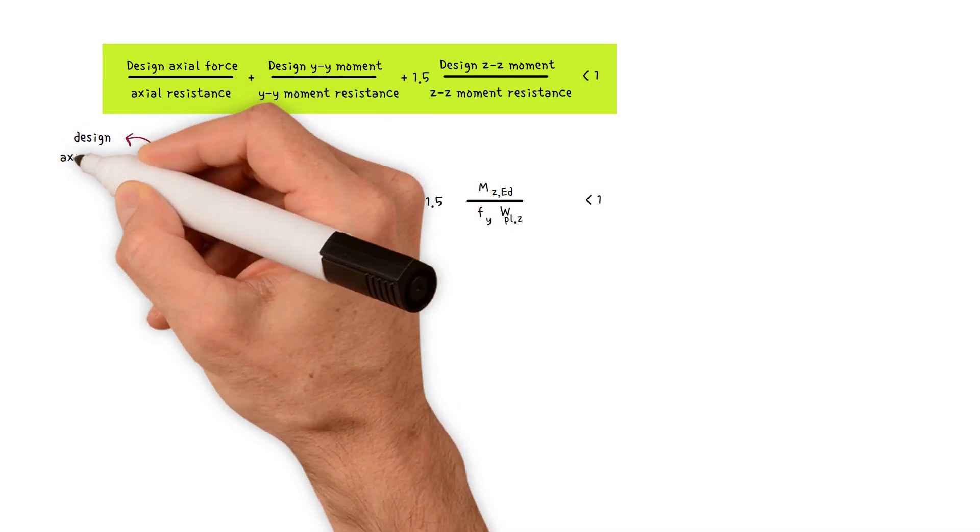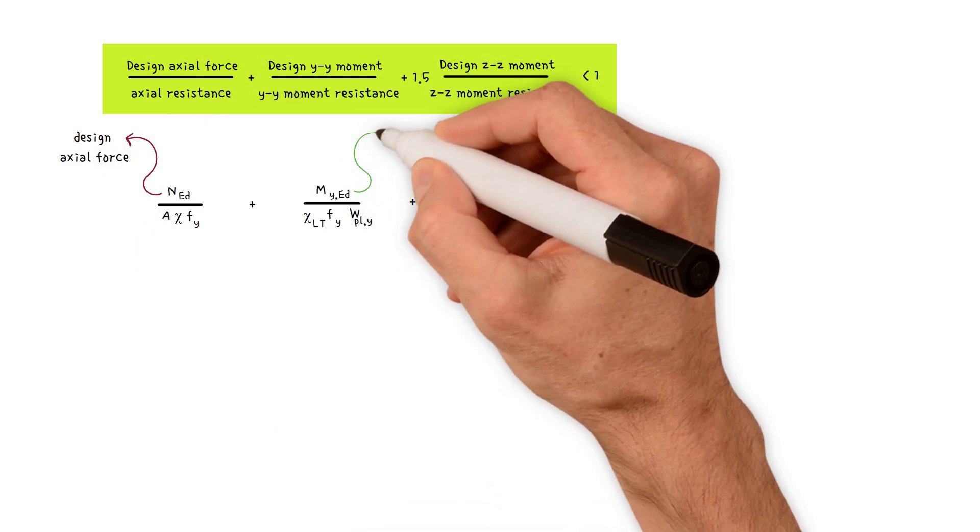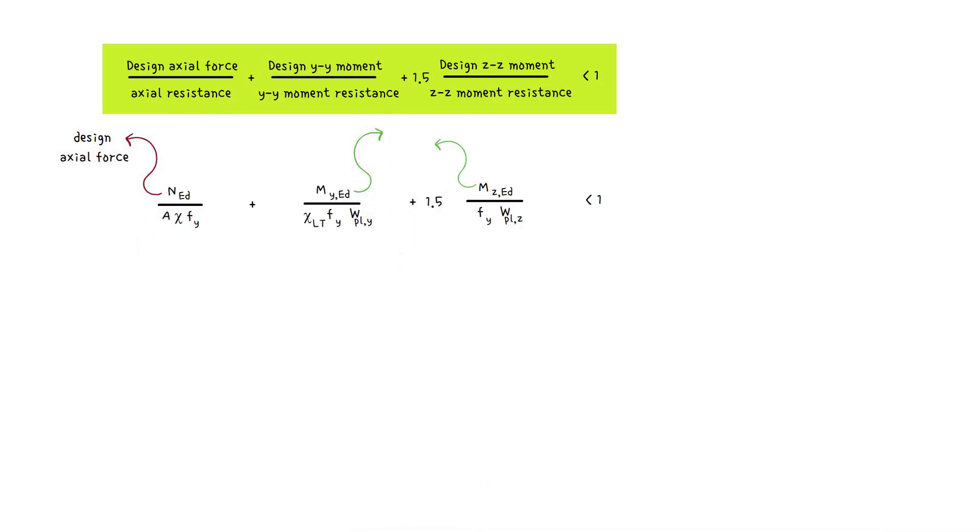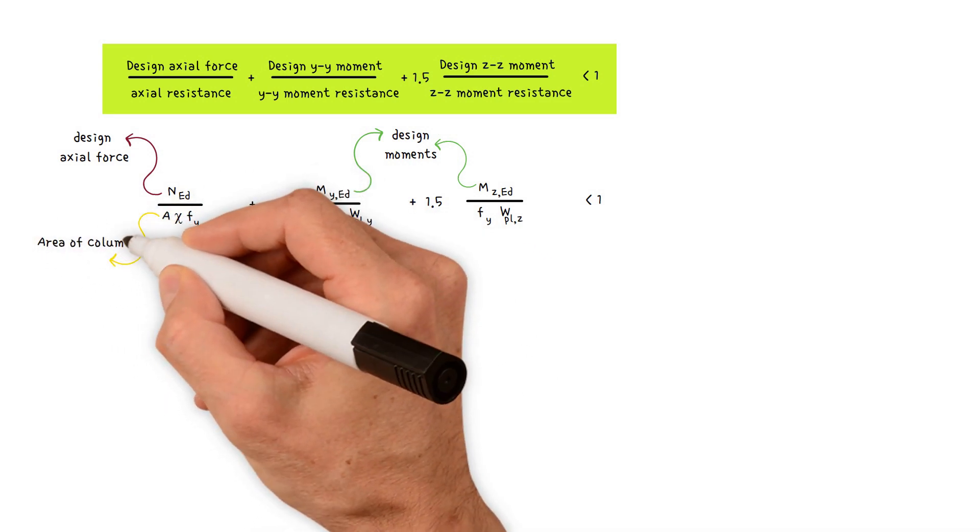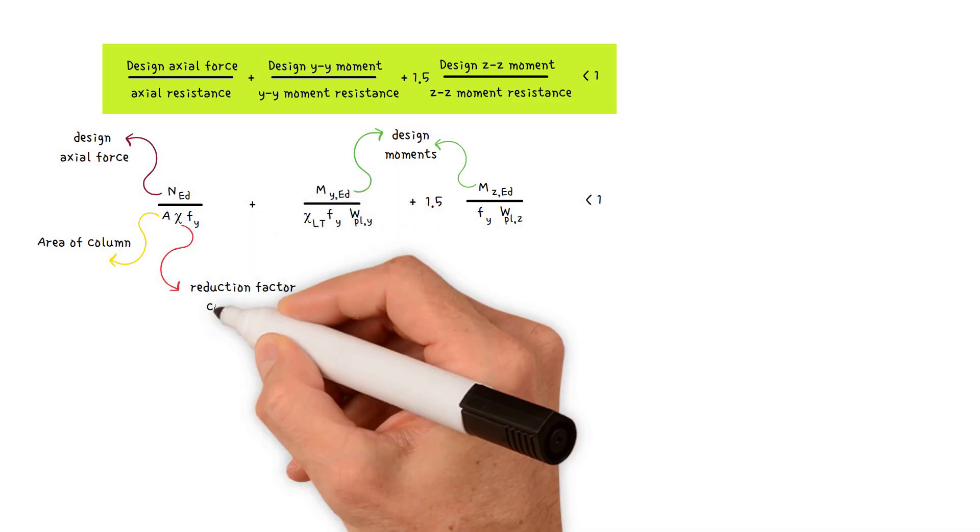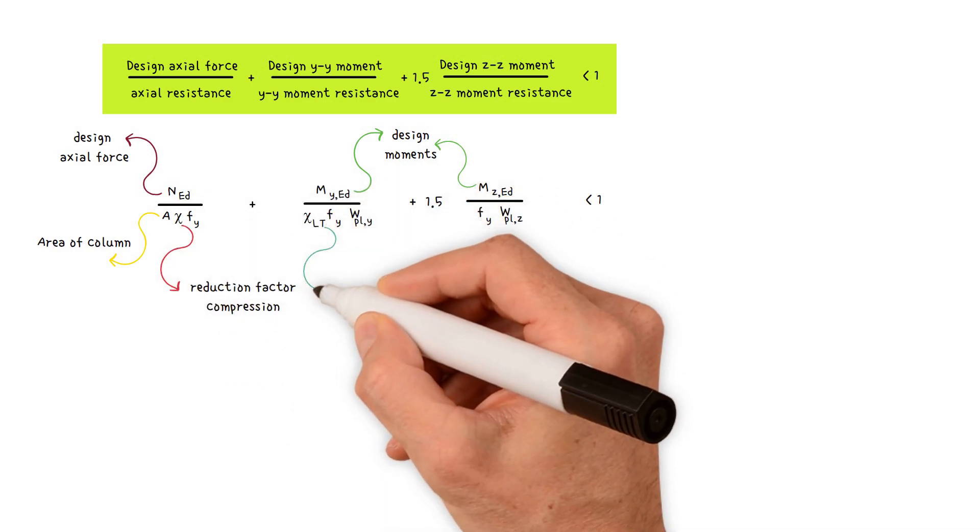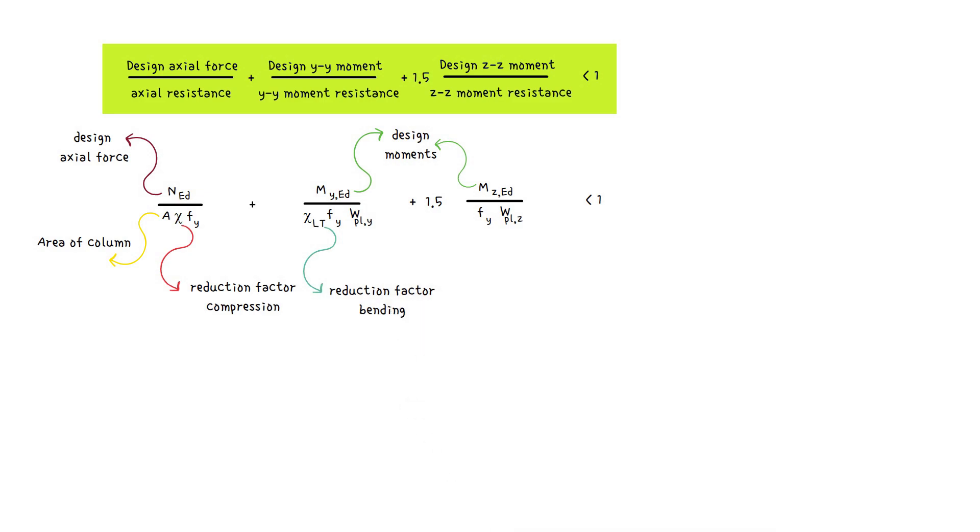Where NED is design axial force, MYED and MZED are design moments about YY and ZZ axis respectively. A is area of column. CHI is reduction factor compression. CHI LT is reduction factor bending.